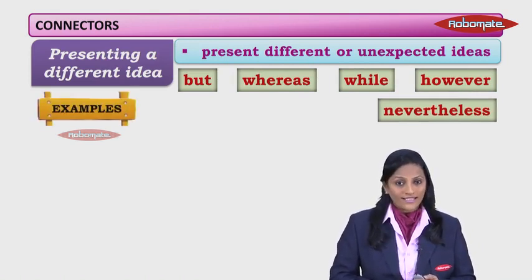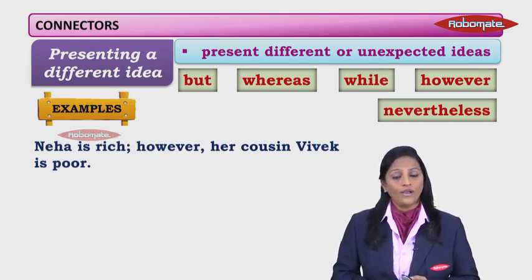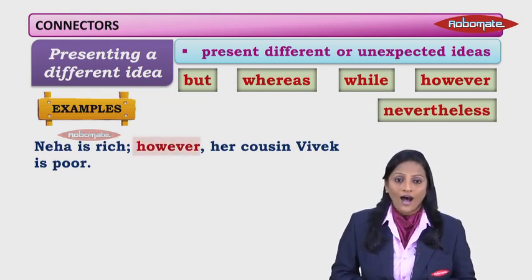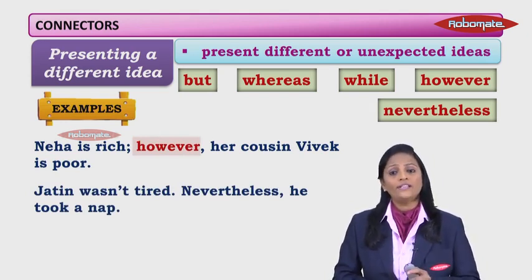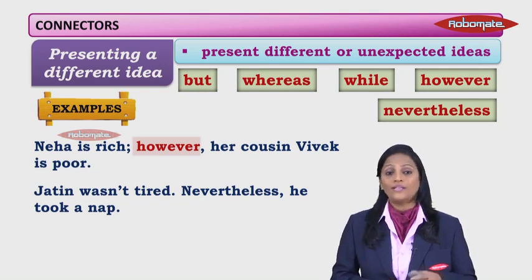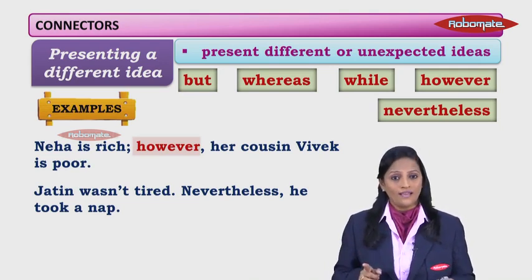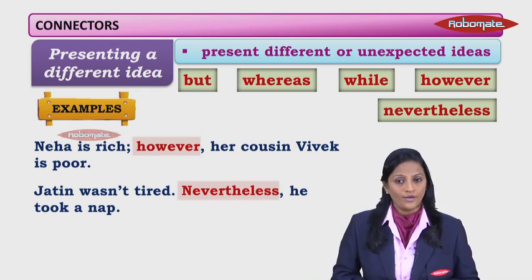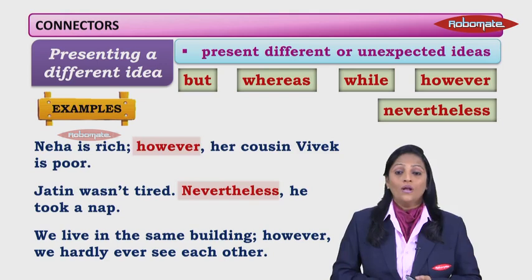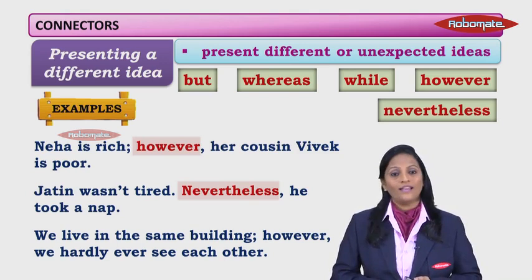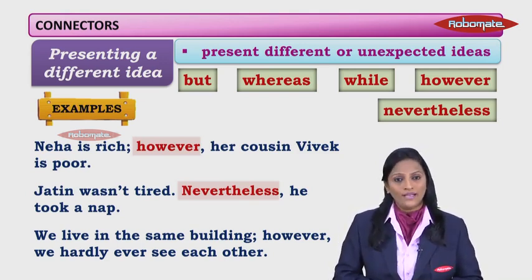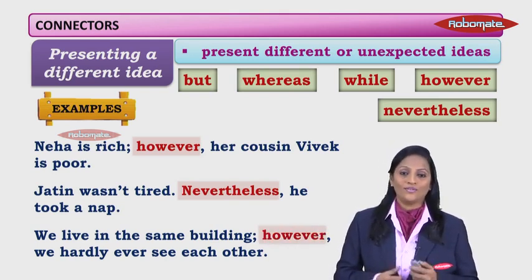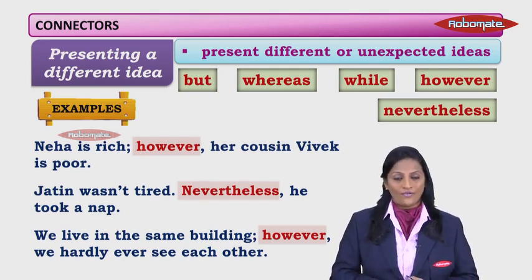Now let's take examples using contrast connectors. Neha is rich. However, her cousin Vivek is poor — two different, contrasting ideas connected by however. Next: Jatin wasn't tired. Nevertheless, he took a nap. He didn't need a nap, but yet he took it — two opposite ideas made clear with nevertheless. We could also say 'but he took a nap.' Another example: We live in the same building. However, we hardly ever see each other. It's unexpected, and so contrast ideas are presented with the connector however.